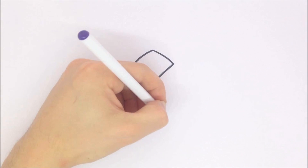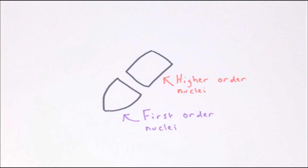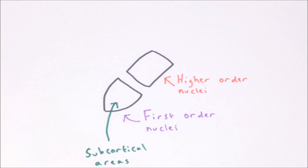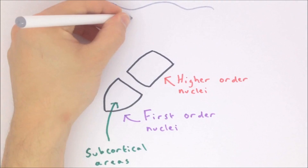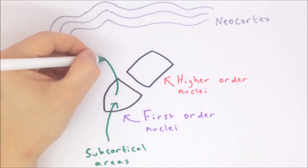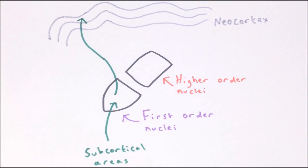A distinction is made between two functional groups of thalamic nuclei: first order and higher order. The difference between these is where their drivers come from. The drivers for first order nuclei arise from the peripheral nervous system or lower brain centers. First order nuclei therefore relay subcortical information to the neocortex and are particularly important in the early stages of sensory processing.